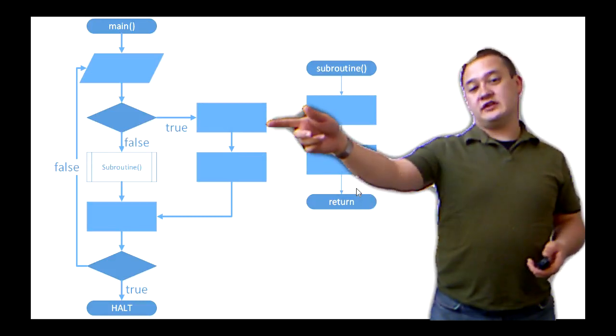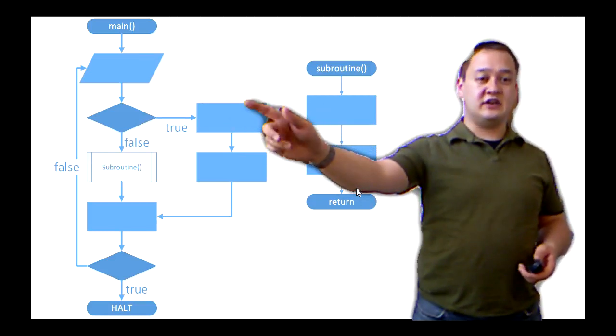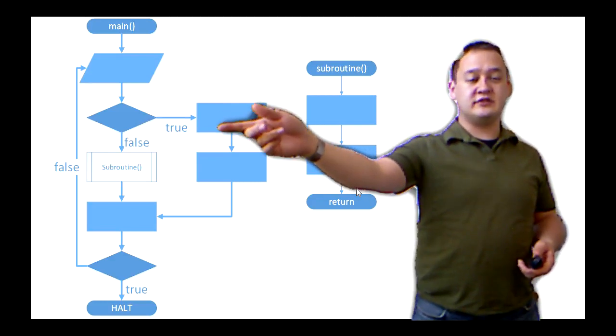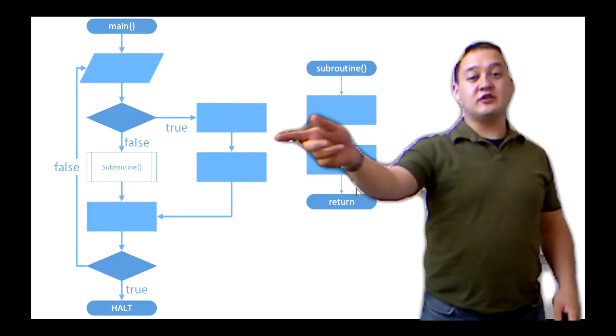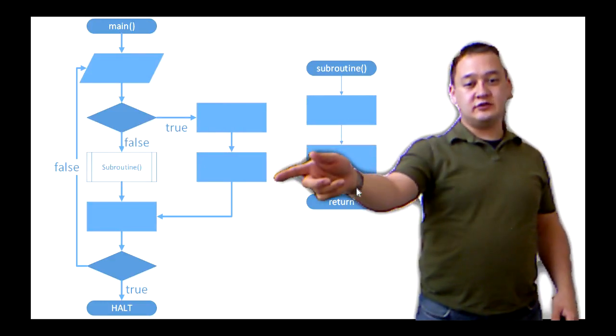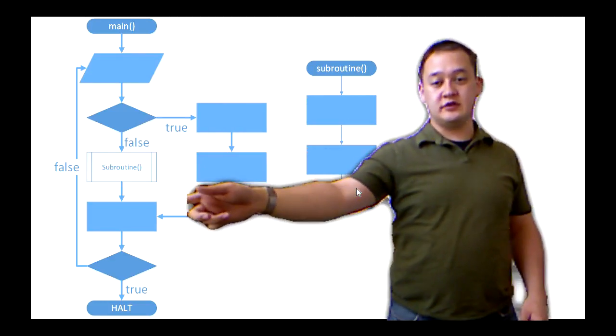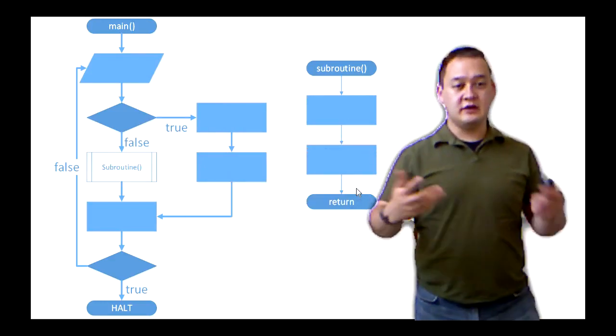And so in this case, let's say I go to the true. Then I'm going to run these two processes here, and then skip over that subroutine in the middle. I'm going to come back to that in a second.